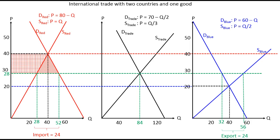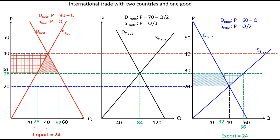Making the same analysis for blue country: the blue squared area represents the gain in producer surplus, since producers now sell at a higher price and a larger quantity — both positive effects. But there are also losers in blue country: consumers are forced to pay a higher price, rising from 20 to 28, which decreases consumer surplus by the blue area.